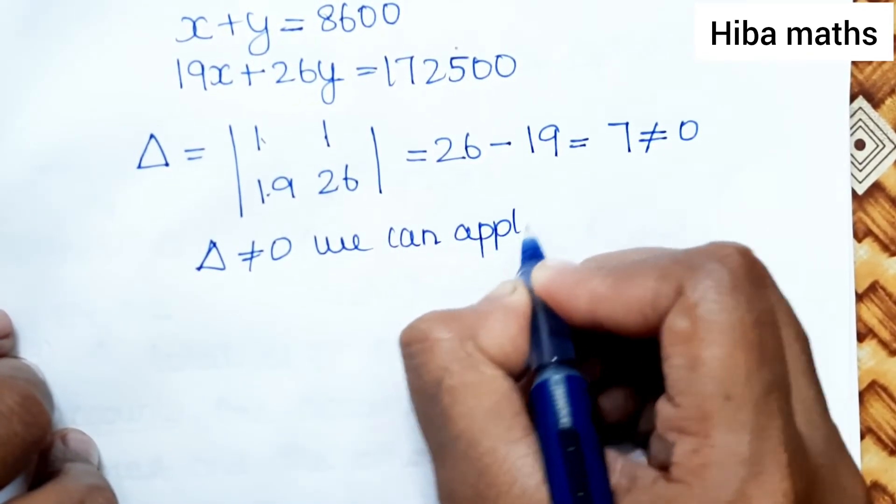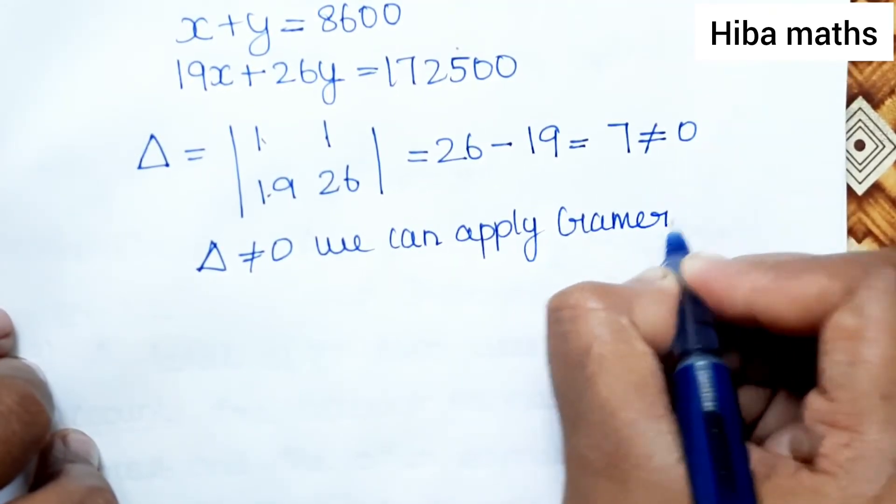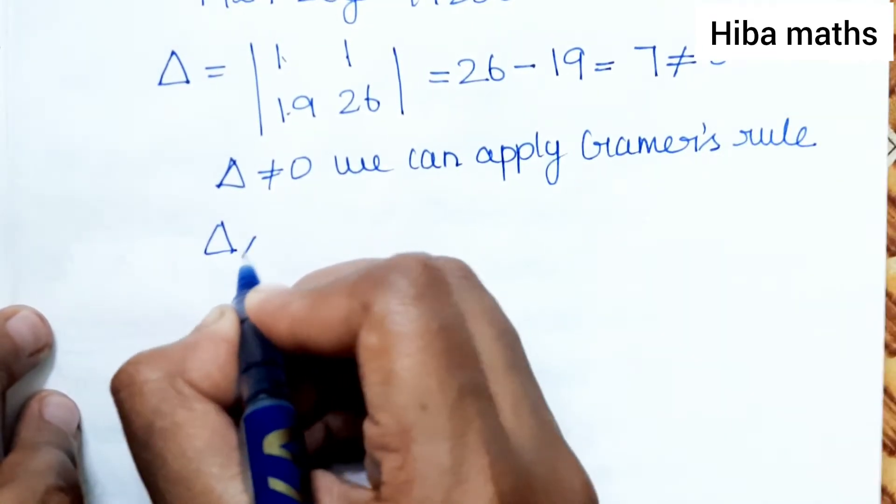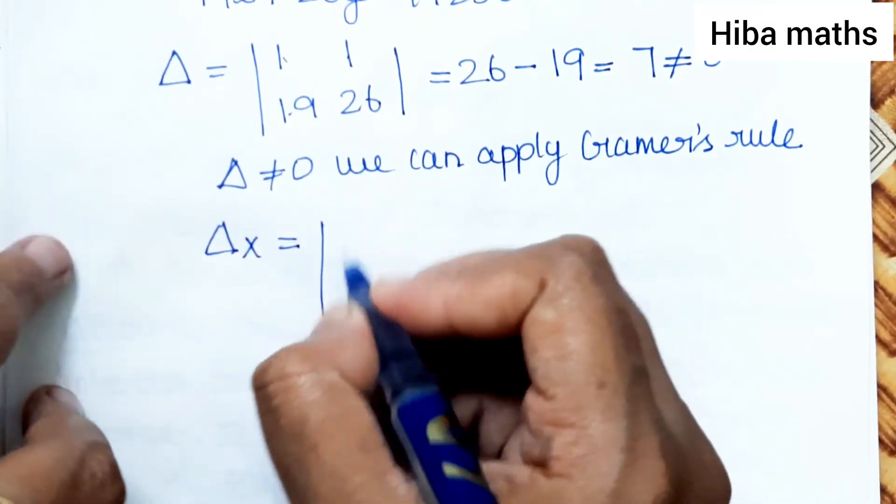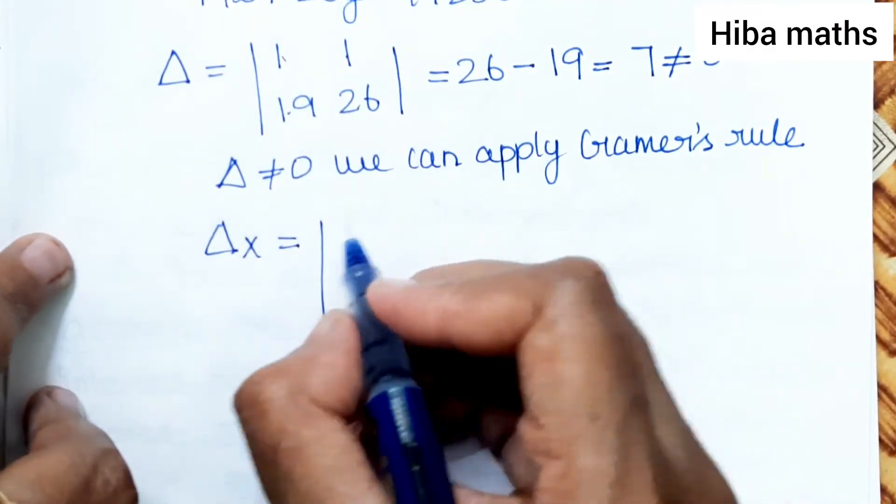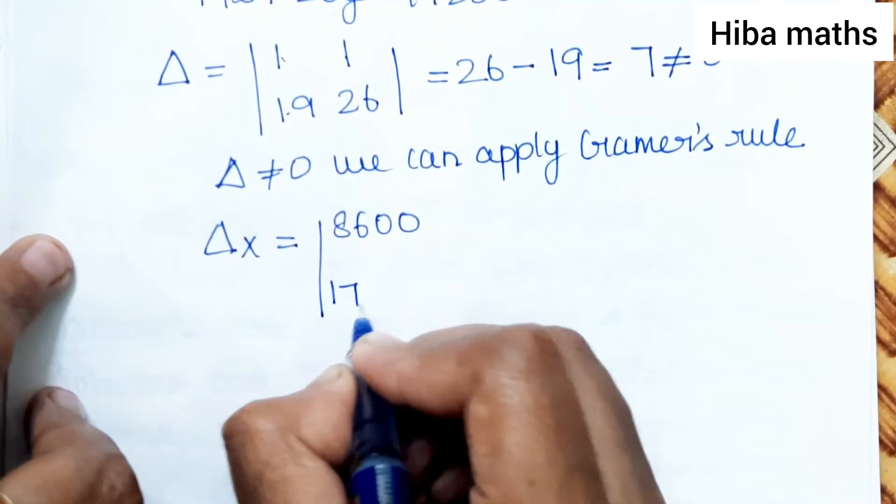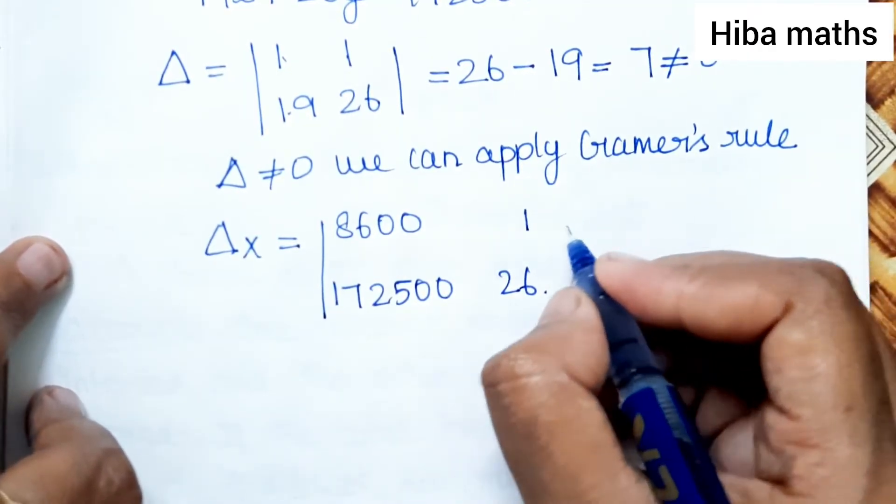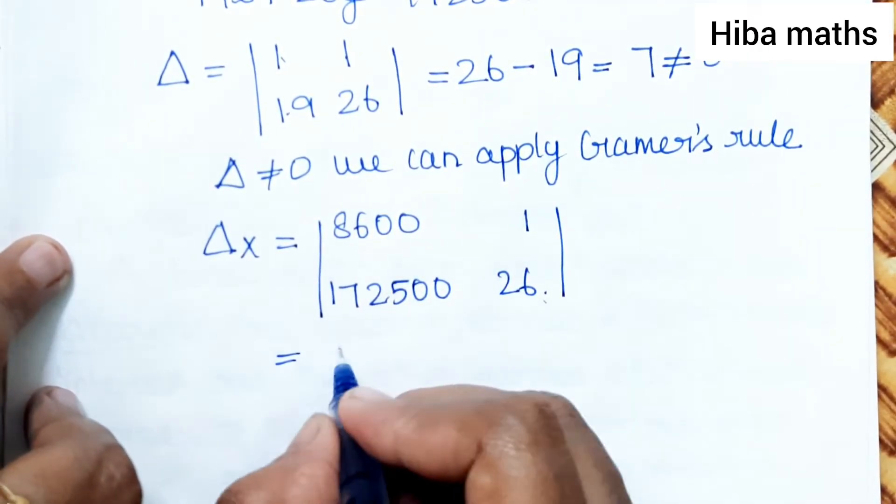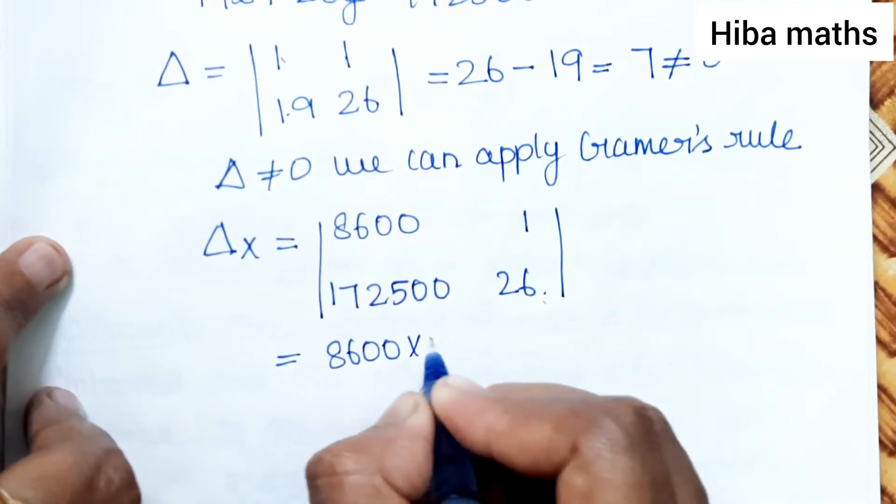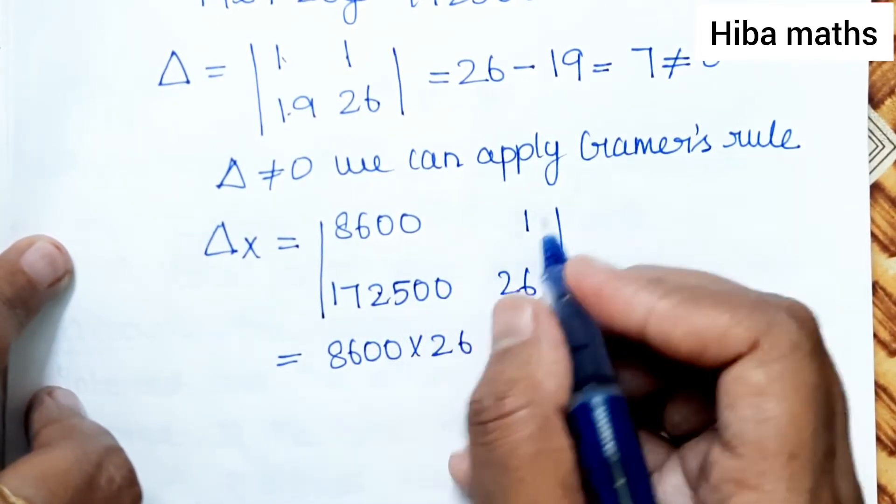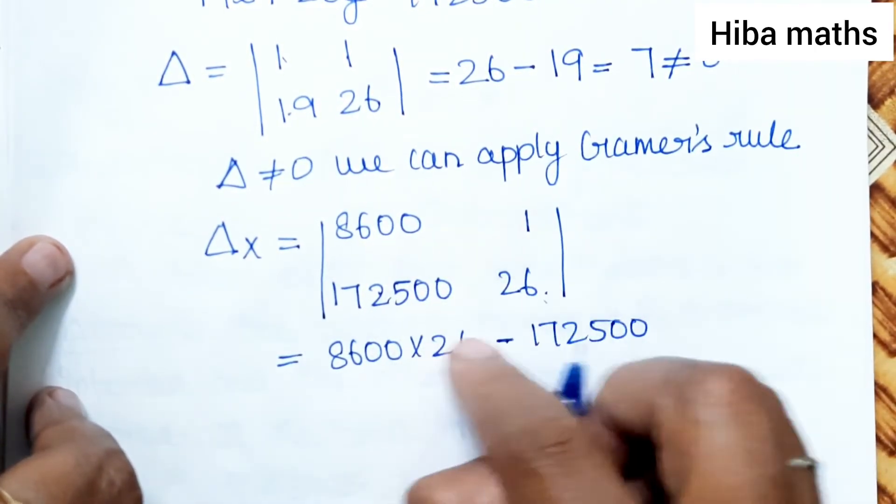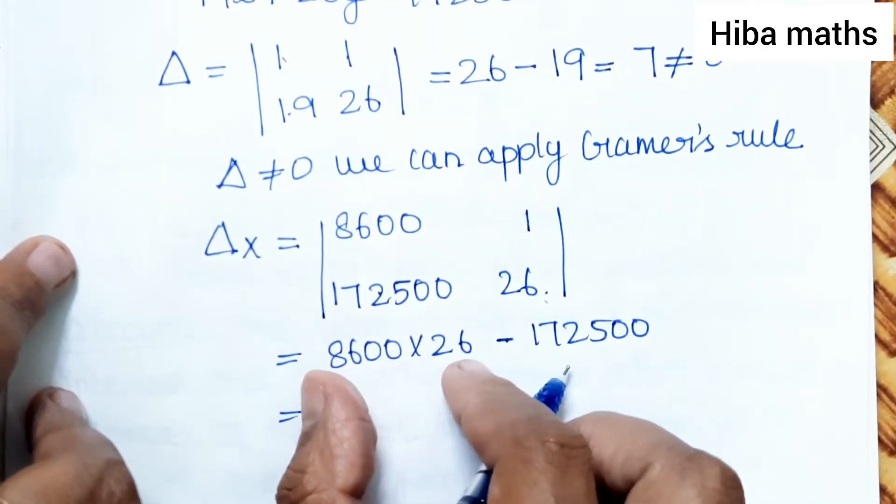We can apply Cramer's rule. First find Del X. Del X is calculated by replacing the first column with the results: 8600, 172500, and 1, 26. Multiply: 8600 times 26 minus 172500 times 1.